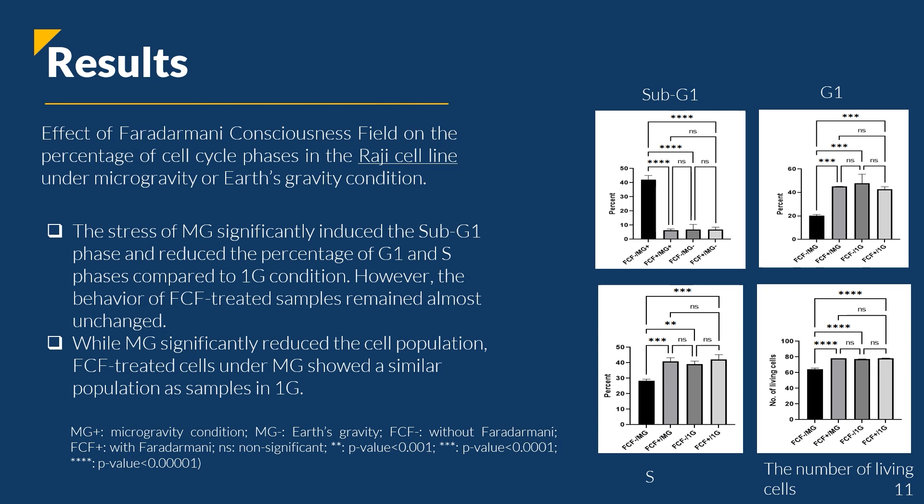The results showed that the stress of microgravity significantly induced the sub-G1 phase and reduced the percentage of G1 and its phases compared to Earth's gravity condition. However, the behavior of pharodermony-treated samples remained almost unchanged. While microgravity significantly reduced the cell population, pharodermony-treated cells under microgravity showed a similar population as samples in Earth's gravity condition.